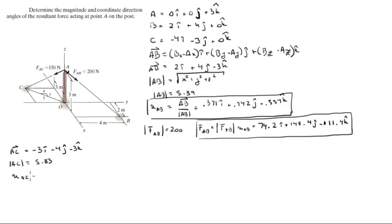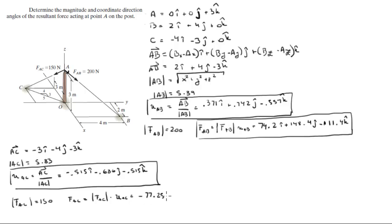The unit vector, which is the vector over the magnitude, comes out to be negative 0.515i minus 0.686j minus 0.515k. And we're given the force of AC, the magnitude, which is 150. So the Cartesian vector form of AC is the magnitude of AC multiplied by the unit vector. And this comes out to be negative 77.25i minus 102.9j minus 77.25k.